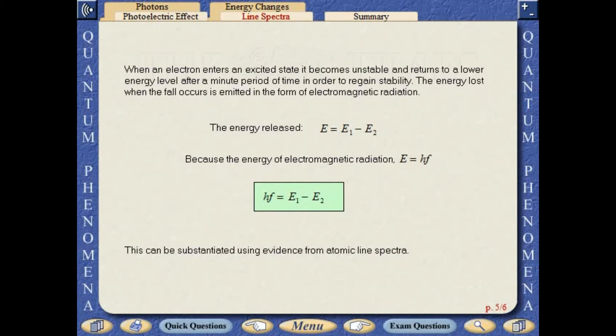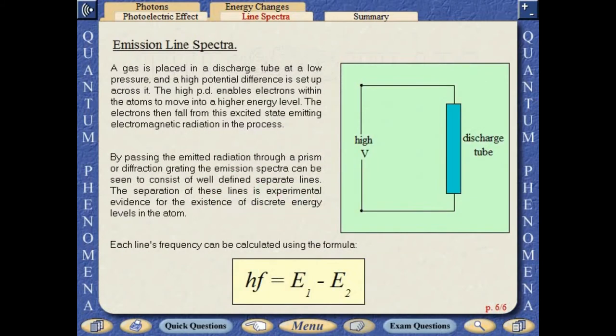This can be substantiated using evidence from atomic line spectra. A gas is placed in a discharge tube at low pressure and a high potential difference is set up across it. The high potential difference enables atoms to move into a higher energy level. The atoms then fall from this excited state, emitting electromagnetic radiation in the process.